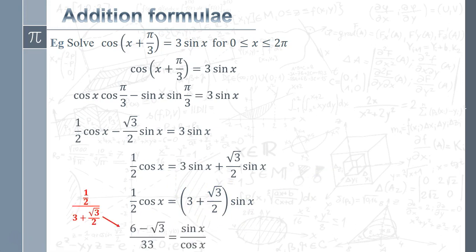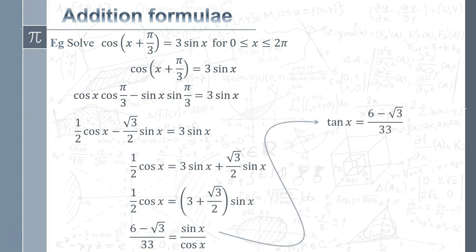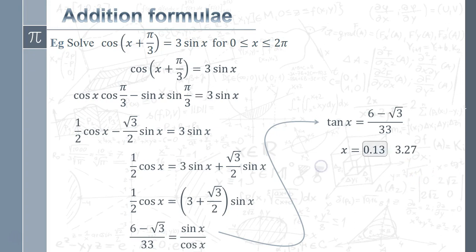Factorising and bringing cos x over gives us sin x over cos x, which is tan x. Putting the value into the calculator: tan x = (6 − √3)/33, approximately. We want values of x between 0 and 2π, so tan⁻¹ gives x ≈ 0.13 radians, and adding π gives x ≈ 3.27 radians. Those are our two solutions.